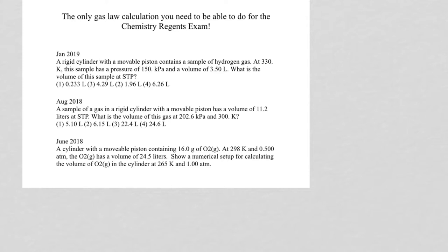I took the three most recent Regents exams from the recording of this video, and I'm starting with the most recent, which was January 2019. We have a cylinder here with a movable piston, a sample of hydrogen gas at 330 Kelvin temperature, has a pressure of 150 kilopascals and a volume of 3.5 liters, and you're asked to figure out the volume at STP.